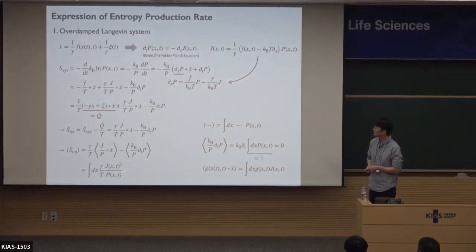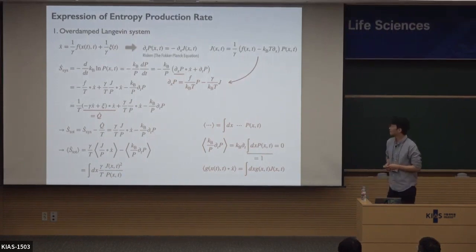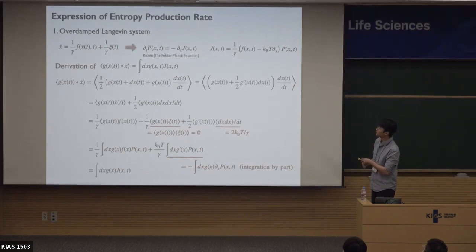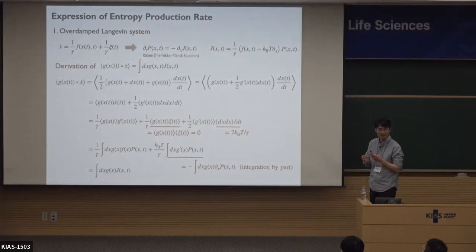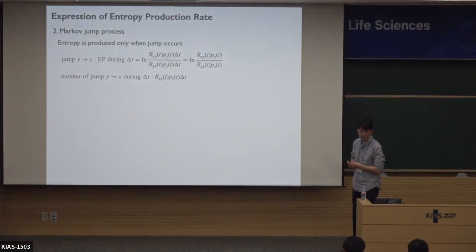I will use this expression to derive thermodynamic uncertainty relations, so please memorize this form. The derivation of the relation between the average and the probability current is in the lecture notes — due to time limits I will skip it here. Now, what is the expression for entropy production rate for the Markov jump process?